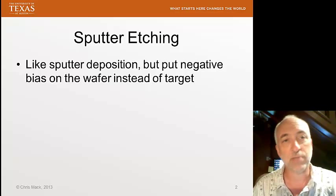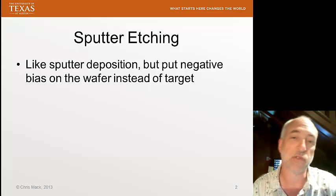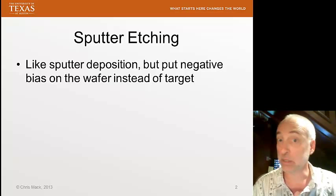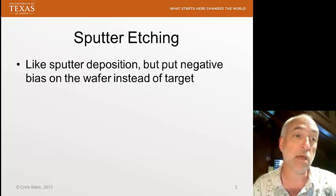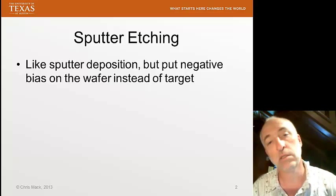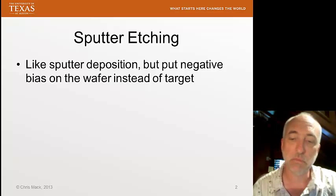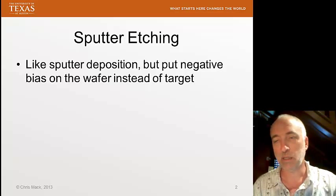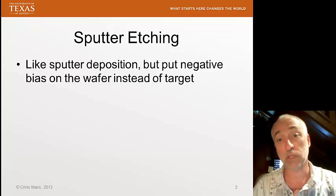In sputter deposition, we would put a neutral, unreactive gas like argon, create a plasma of argon gas, put a negative voltage on the target of the material that we want to sputter deposit, and the argon ions would be accelerated to the target and sputter off the target — knock it off like a sandblaster. These target atoms would then float around and land on the wafer and deposit.